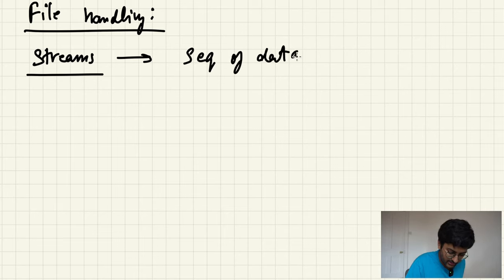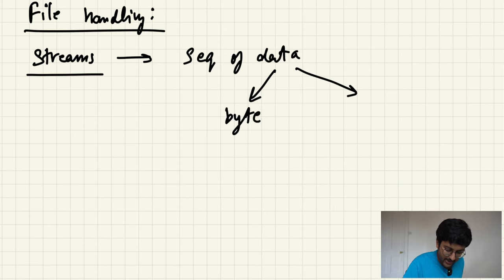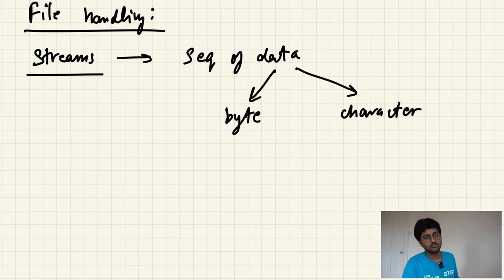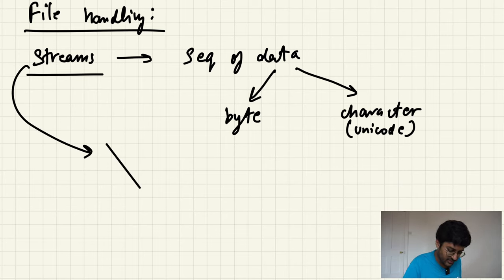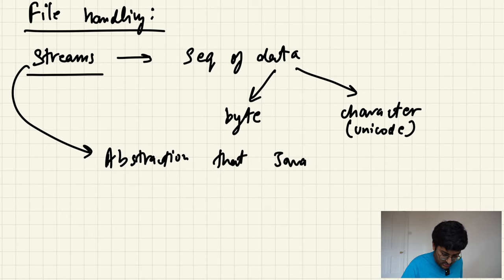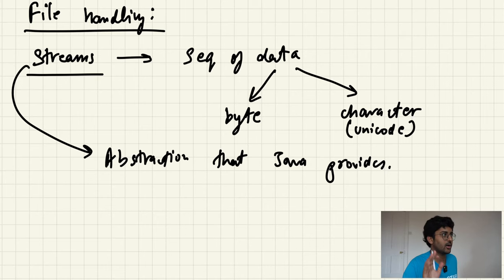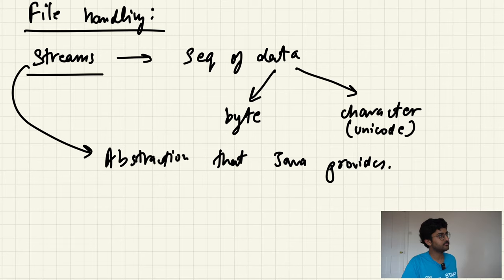A stream is basically a sequence of data. This data can be of two types: it can be byte values or it can be character values — unicode characters in a sequence order. Like you have your name or whatever. And let's say you are storing an image — that can be in byte format. Java performs input-output through these streams. This is basically just an abstraction that Java provides — hiding all the complexity. You want to work with files, Java has some stuff built in for it.